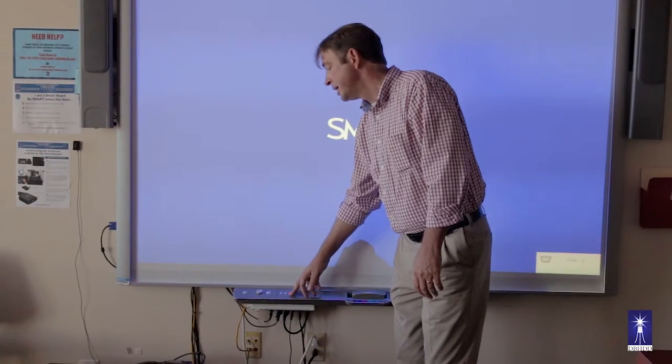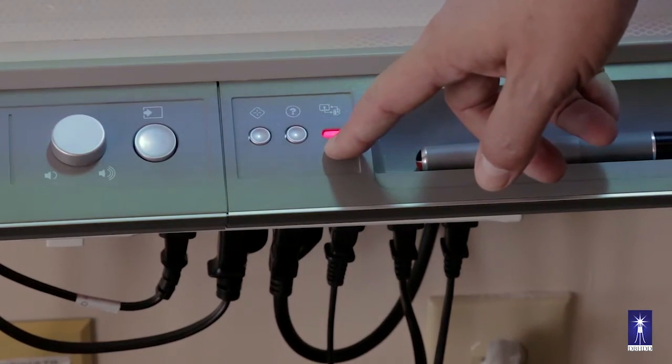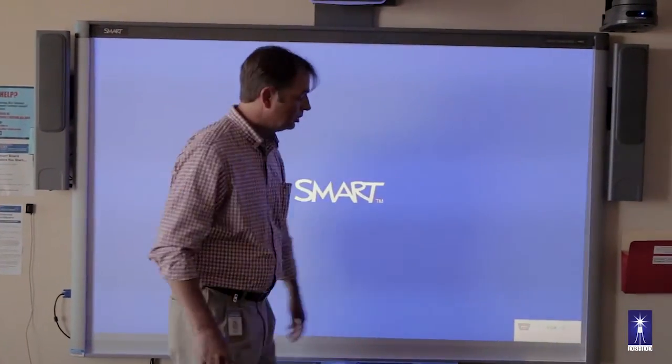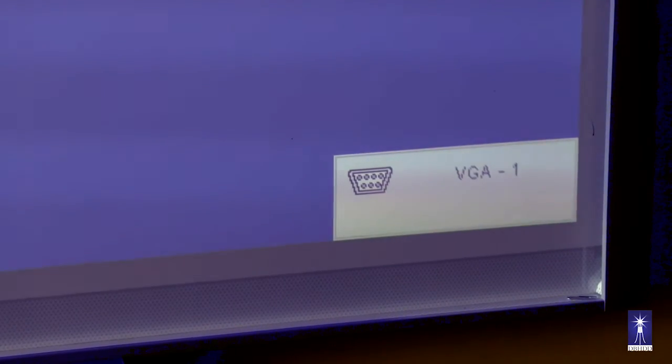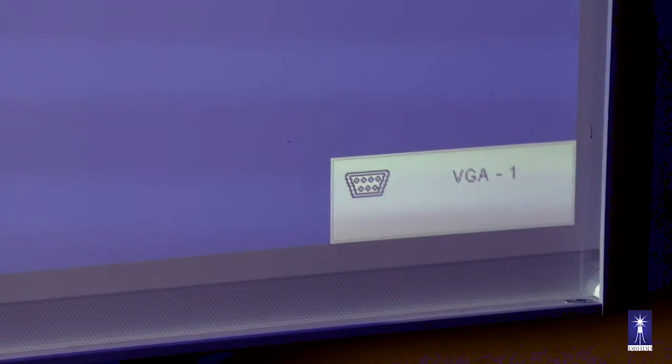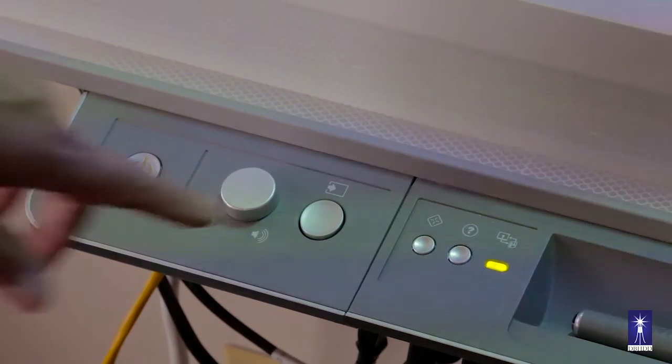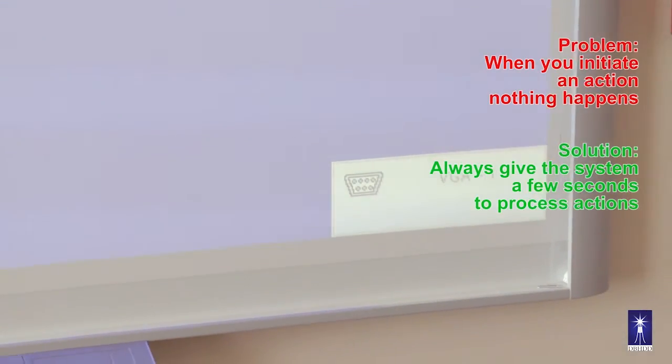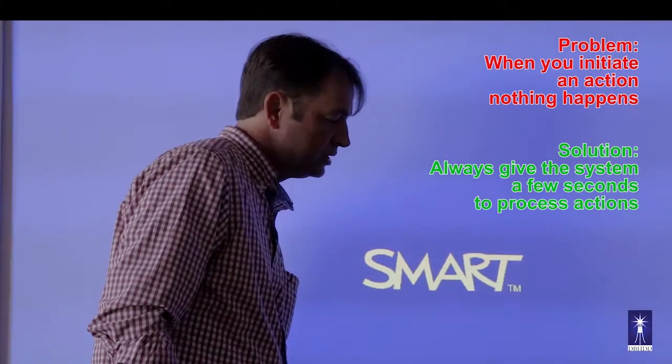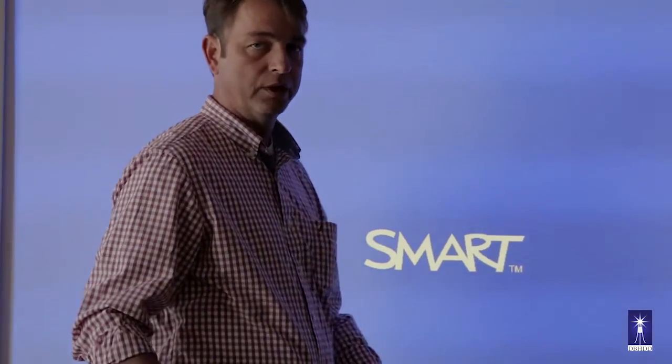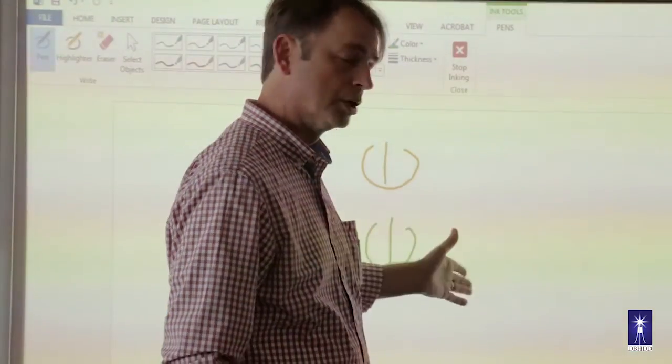Anytime you have a status light of red, that means there's no communication between the board and the PC. The first thing you should check is look in the bottom left hand corner. This should say VGA1. If it doesn't say VGA1, hit the third button, pause until you get to VGA1. Let it sit there. The biggest thing that people do is they panic and they just steadily hit the button and don't give it time to synchronize. VGA1, give it a little time and it should come back up for you.